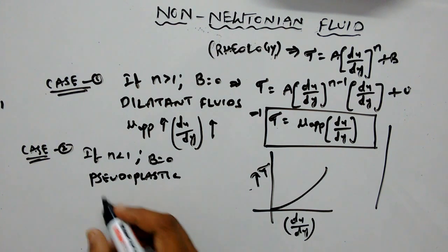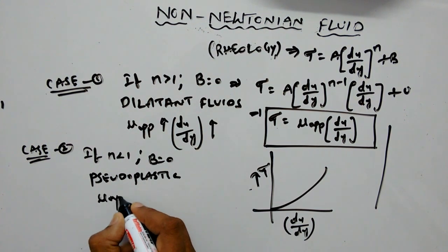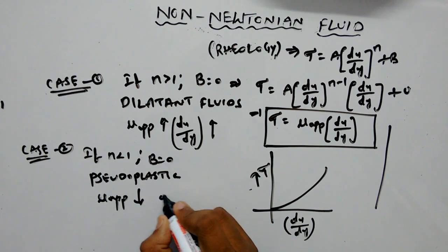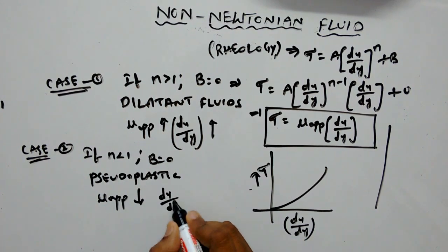For pseudo plastic fluids, apparent viscosity decreases with increasing velocity gradient or shear strain.